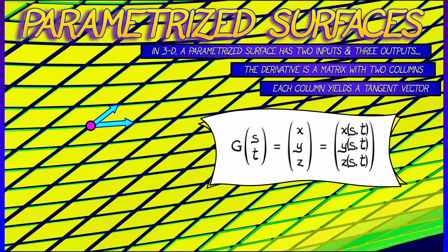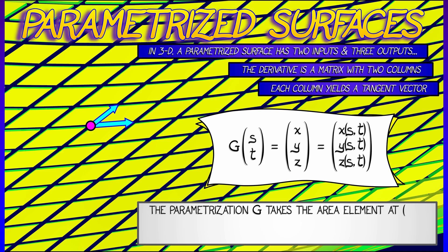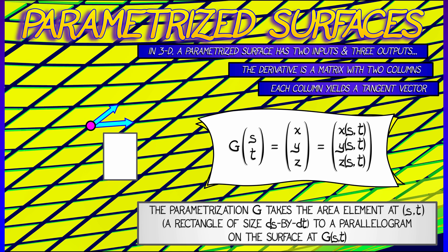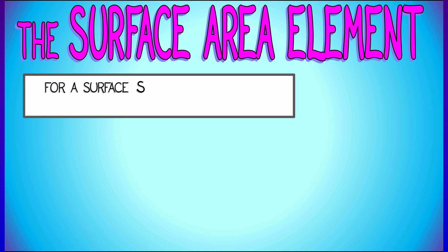So back to the context of a parametrized surface given by g. If we want to know what the surface area element is, we look at those two tangent vectors, partial g partial s, partial g partial t. If we take the length of the cross product of those two vectors, we get the surface area element.